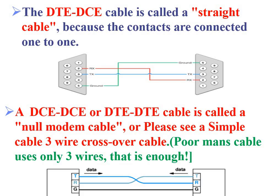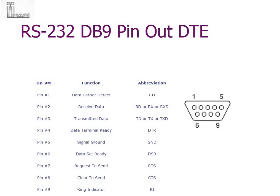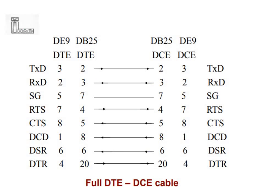Whereas when DCE-DCE or DTE-DTE communication takes place — for example, my computer is a DTE and my temperature meter is also a DTE — I need to make a null modem cable: transmit goes to receive and receive goes to transmit. This is how the DTE pin diagram looks. There are nine pins in the connector; you need three wires for basic communication: pin numbers 2, 3, and 5. Sometimes people also use a 25-pin D-connector for RS-232.